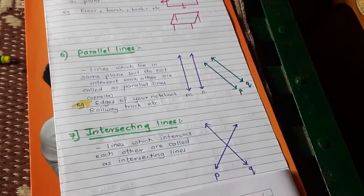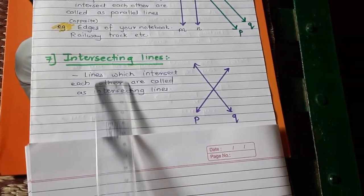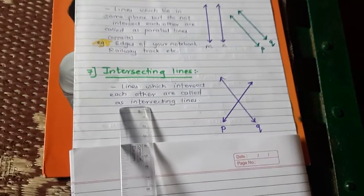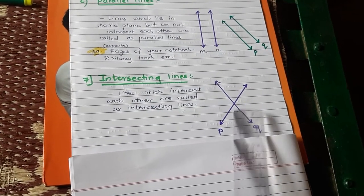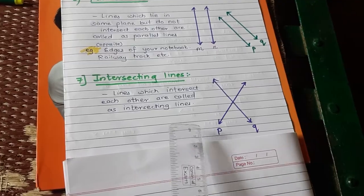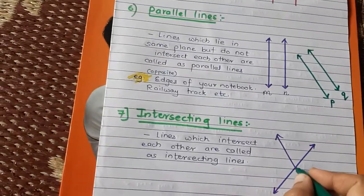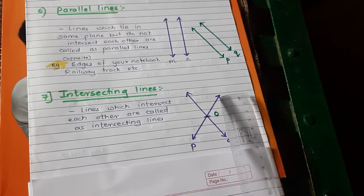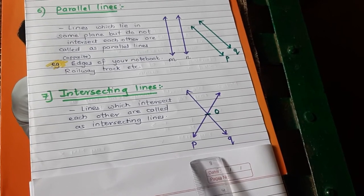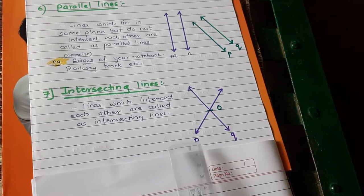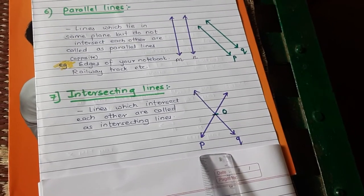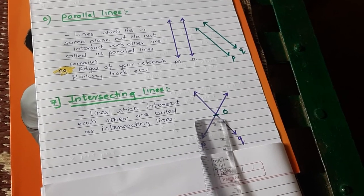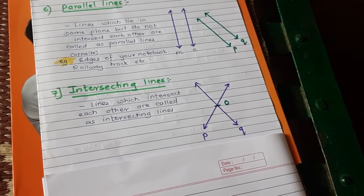The next concept is intersecting lines. Lines which intersect with each other are called intersecting lines. You can see here they are intersecting at point O. Line P and line Q are touching each other at point O — that is why they are called intersecting lines. Use small initials, meaning small alphabets, to label the lines.